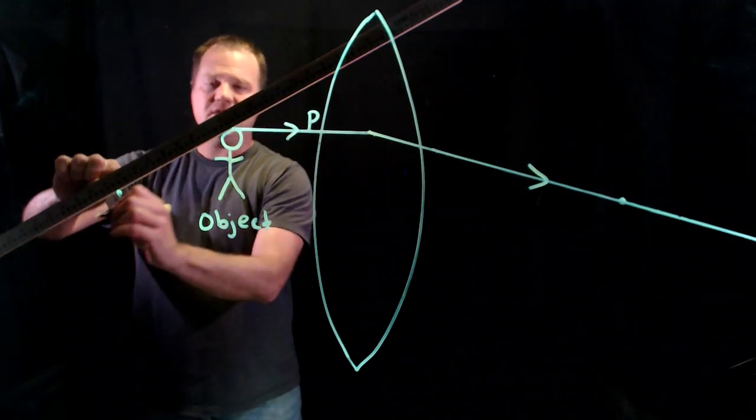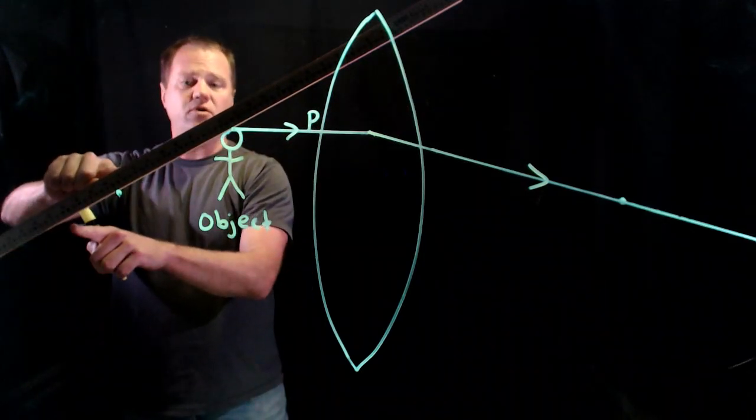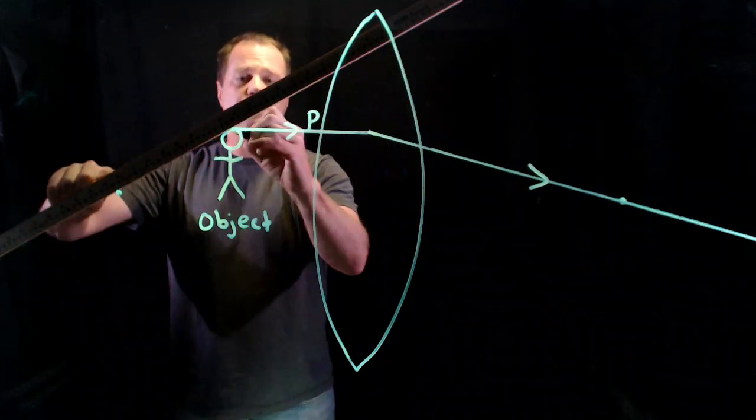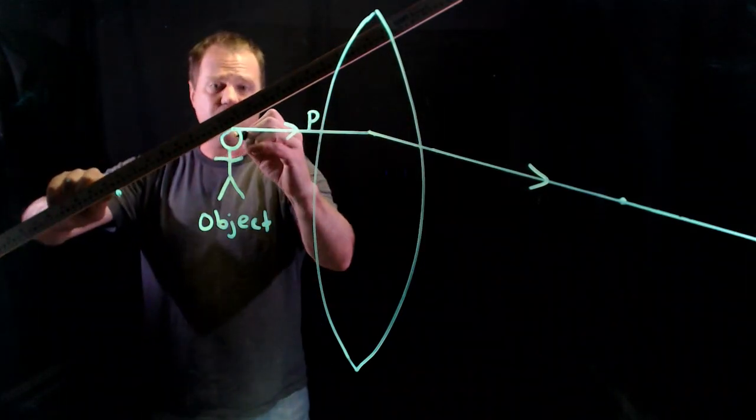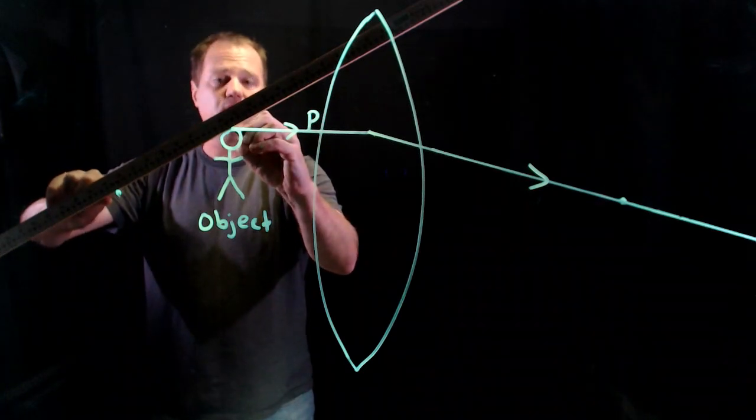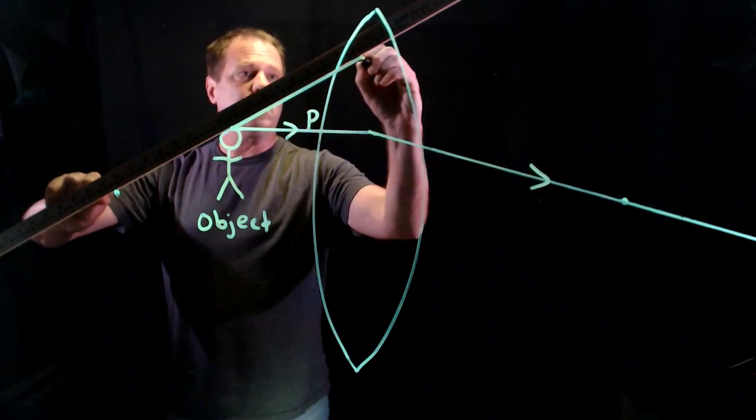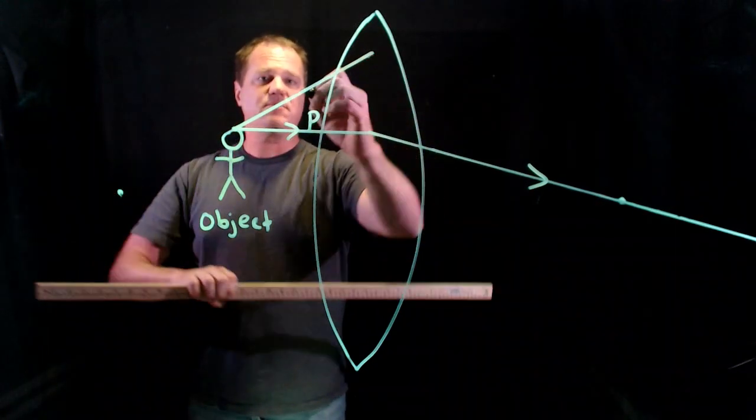And instead of going this way towards the focal point, I'm going to go away from the focal point, as if it had come from the focal point, even though the light never went there. So I draw a line up like this. That's my F ray.